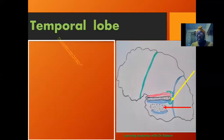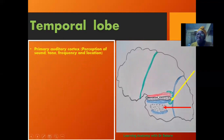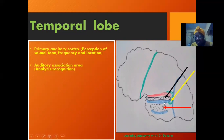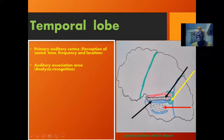For the temporal lobe, we have the primary auditory cortex. We already know that the lateral sulcus separates the parietal lobe from the temporal lobe. Just inferior to the lateral sulcus is the primary auditory cortex, responsible for the perception of sound — the tone, frequency, and location of sound being perceived. Around it we have the auditory association area, which analyzes the auditory input perceived by the primary auditory cortex.